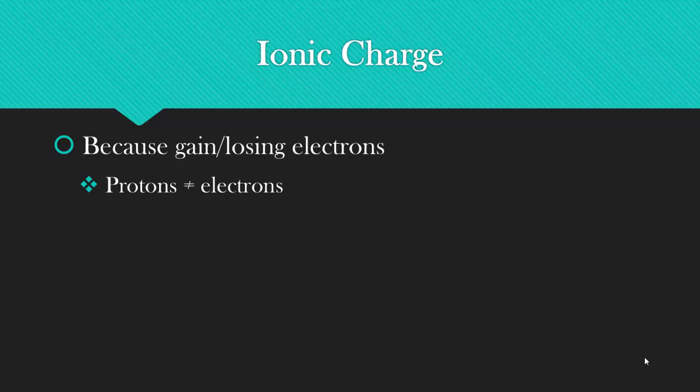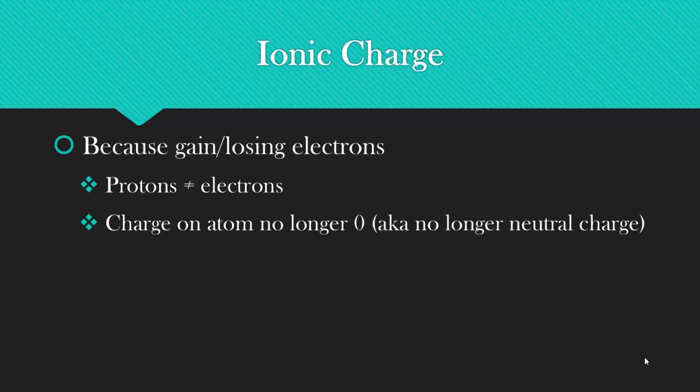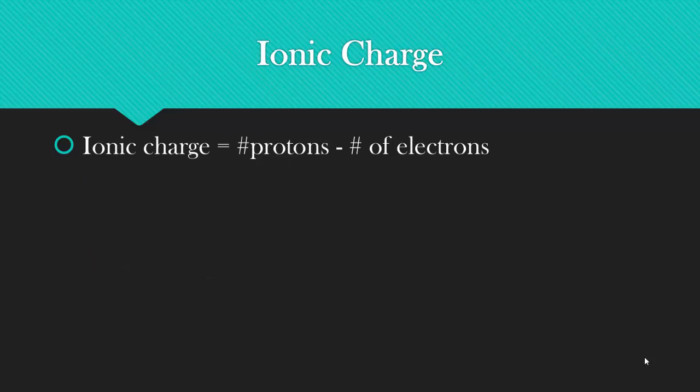Because we are gaining or losing electrons, the number of protons no longer equals the number of electrons. This is why I was insistent that elements are defined by the number of protons. Those will not change within an element, but electrons can. This means the charge on the atom is no longer zero. Or in other words, you no longer have a neutral charge, which means you now have an ion, and an ion has an ionic charge. The ionic charge is defined as the number of protons minus the number of electrons that the ion has. This ionic charge can be either positive or negative. And if you have a positively charged ion, you say you have a cation. If you have a negatively charged ion, you say you have an anion.